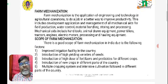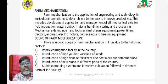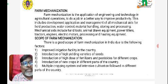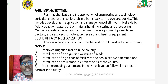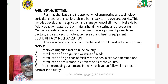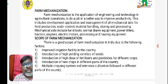The definition of farm mechanization is the application of engineering and technology in agricultural operations to do a job in a better way to improve the productivity. This includes development, applications and management of all mechanical aids for field production, water control, material handling, storage and processing.